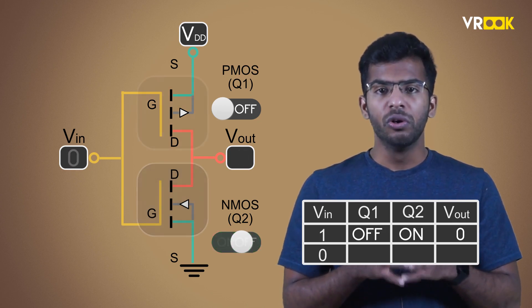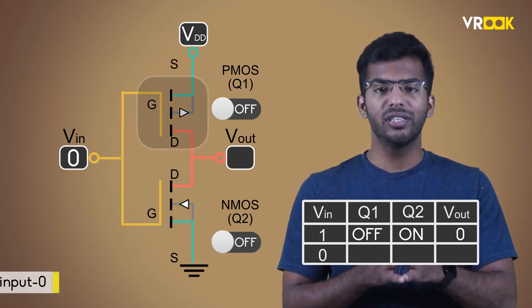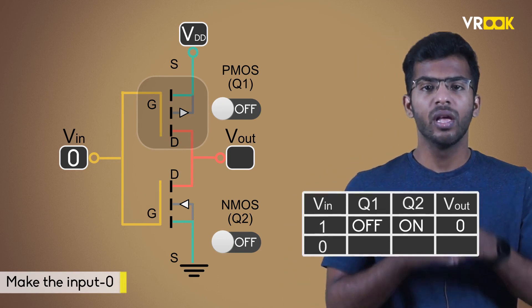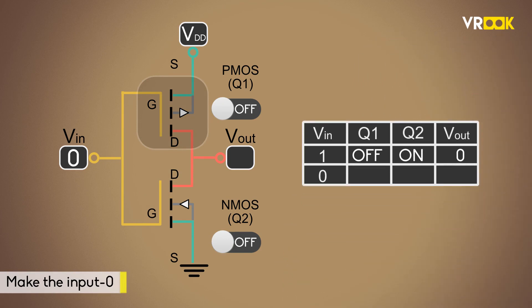Moving on to case 2, we will make the input logic 0 or low voltage. In this case, the gate terminal of the PMOS is at 0 volts and the source terminal is at higher voltage VDD. The current flows in the PMOS circuit. Therefore, PMOS is switched on.